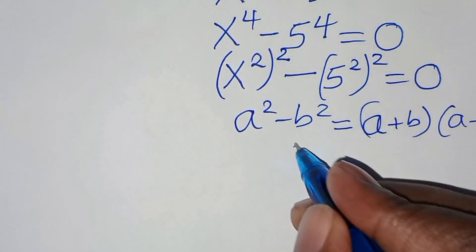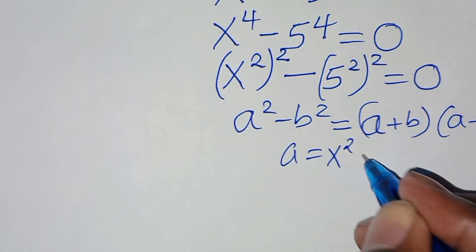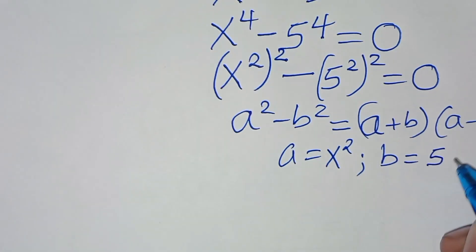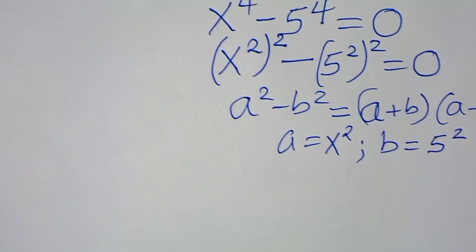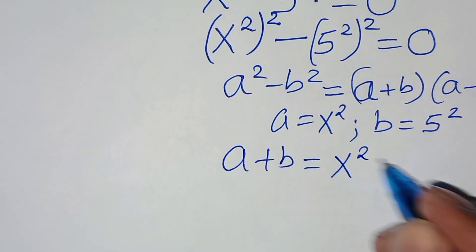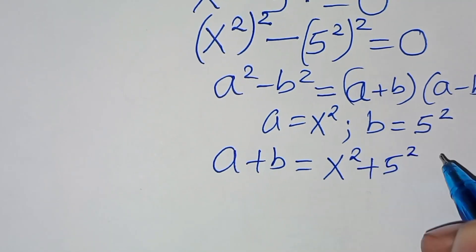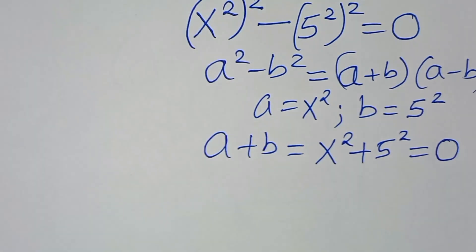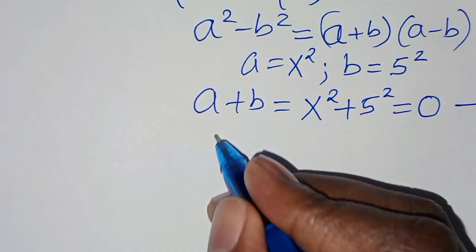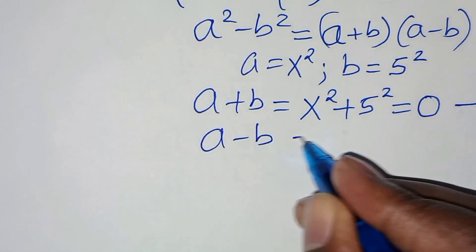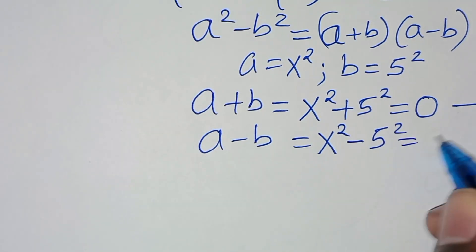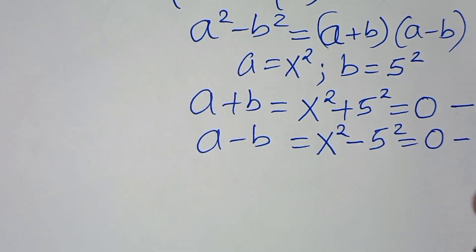In this case, we have a equal to x squared and b equal to 5 squared. So this gives us two factors: a plus b, which is x squared plus 5 squared equals 0 — let's call this equation 1 — and a minus b, which is x squared minus 5 squared equals 0 — let's call this equation 2.